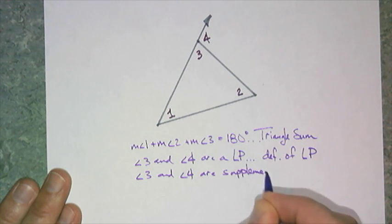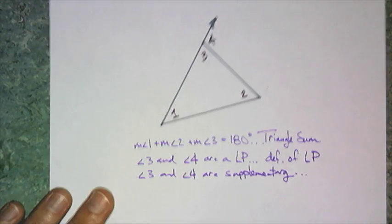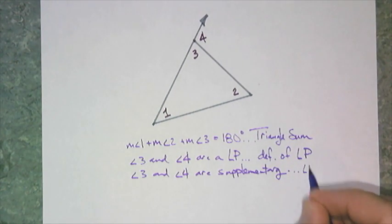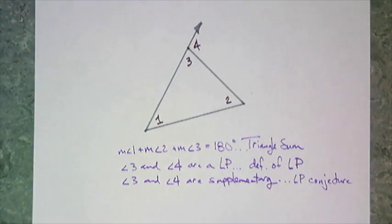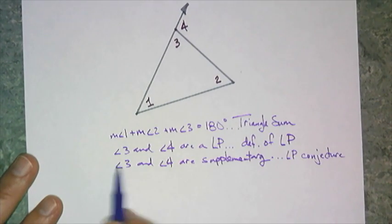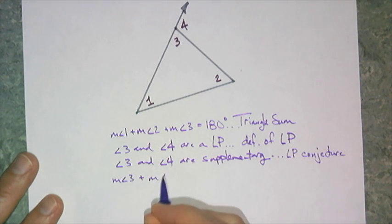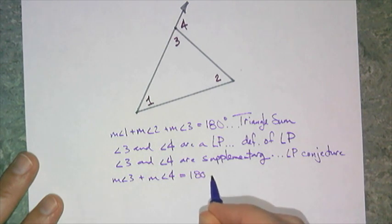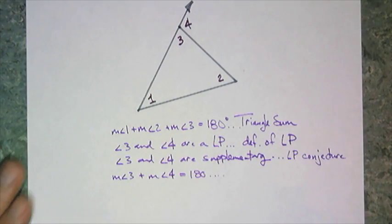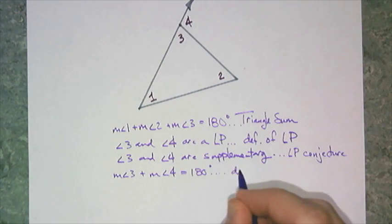And since they're linear pair, angle 3 and angle 4 are supplementary. You remember what that's from? That's from that linear pair conjecture that we did before. And since they're supplementary, the measure of angle 3 plus the measure of angle 4 is equal to 180 degrees. And I know that by definition of supplementary.